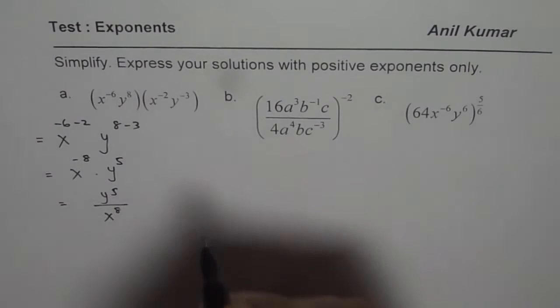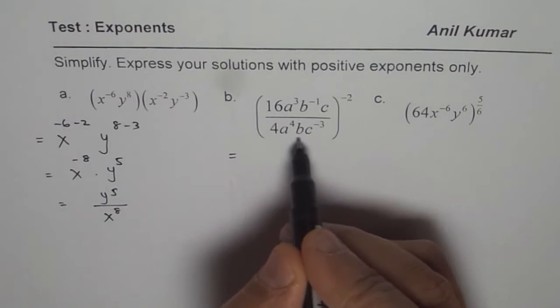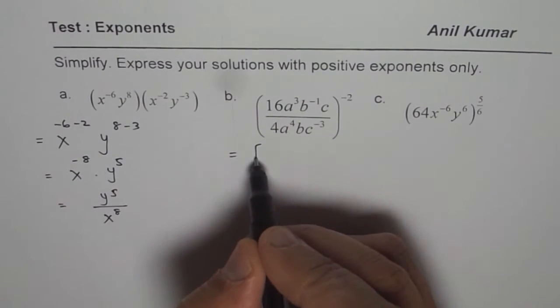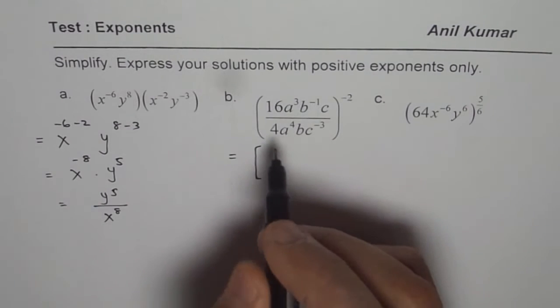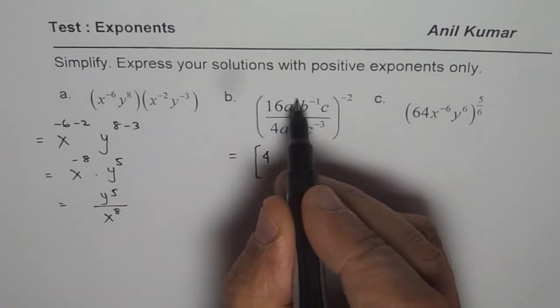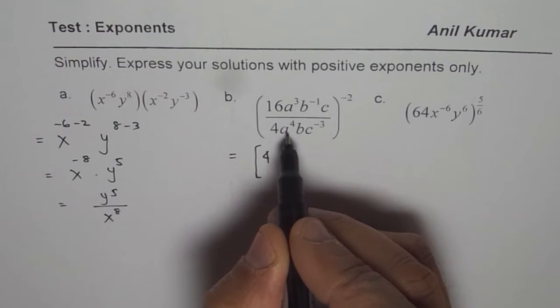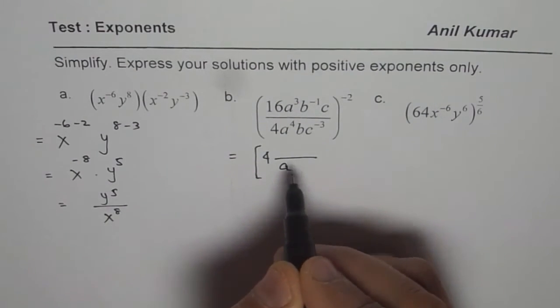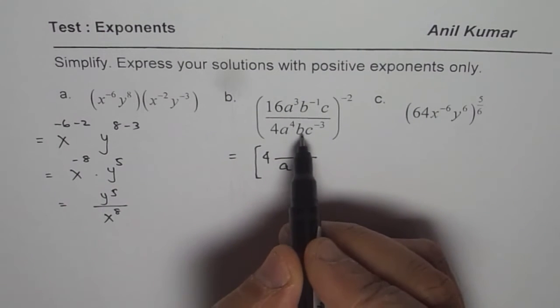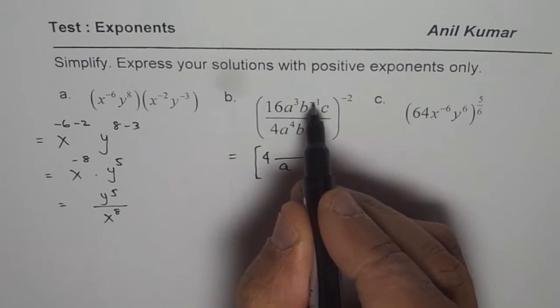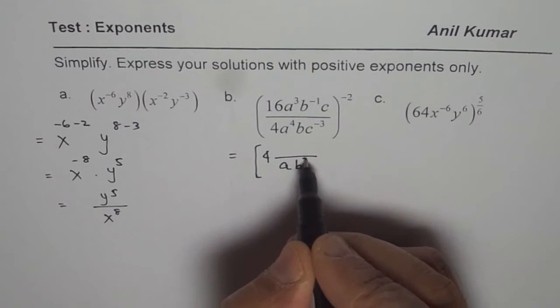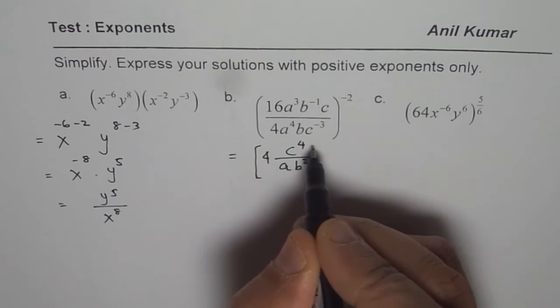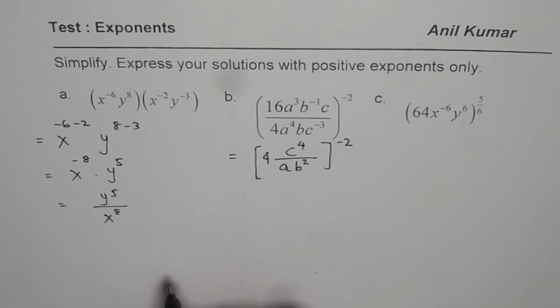Let us do the next one. We can simplify the terms inside and then apply the power. 16 divided by 4 is 4. a³ divided by a⁴ will be 1 over a, so a goes in the denominator. For b, we get b² in the denominator. For c, this goes on top, so 1 plus 3 is 4. We can simplify this to the power of -2.